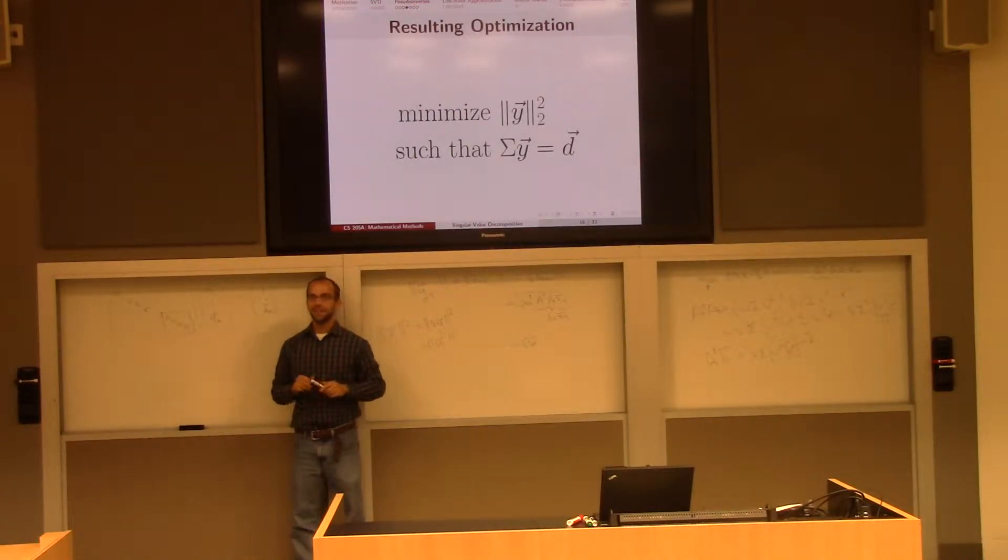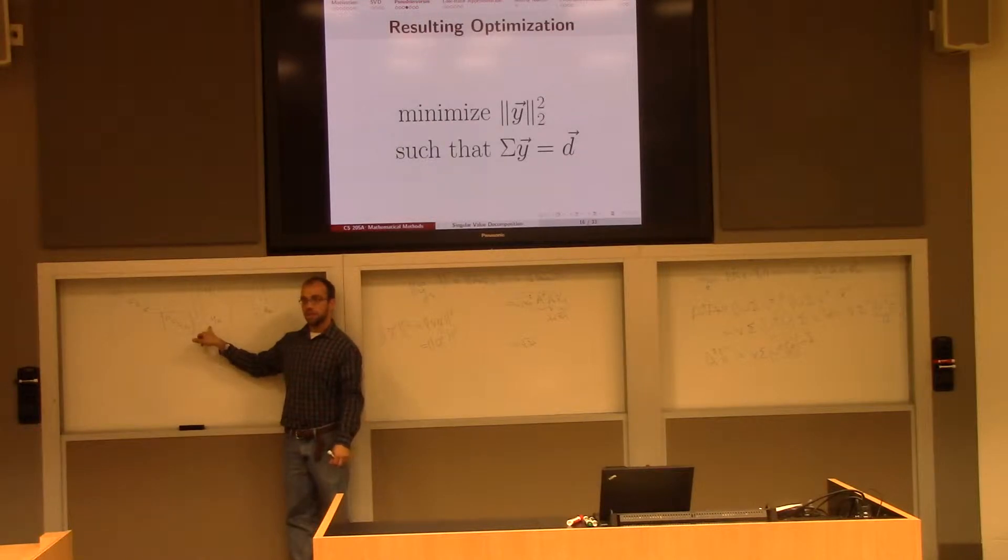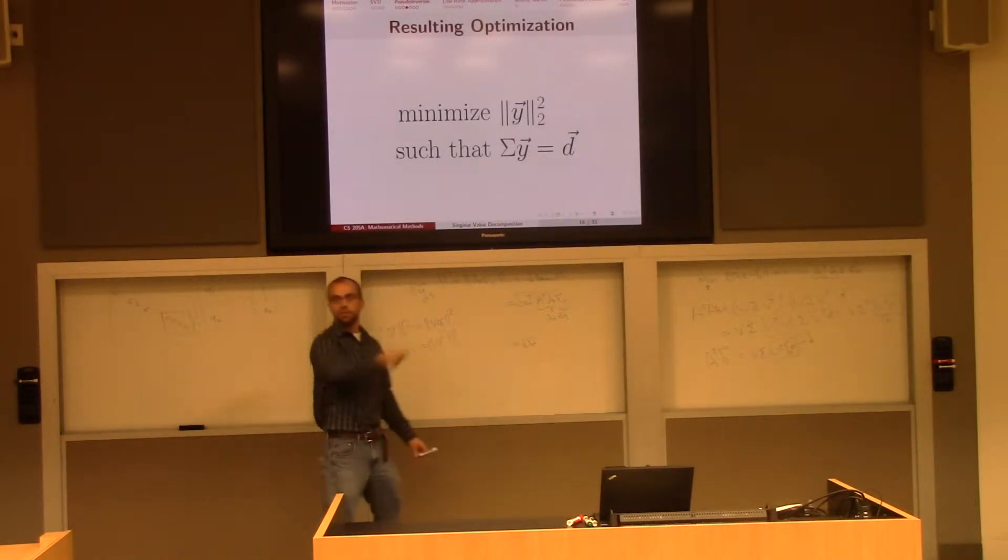So what does this mean? This means that if I want to solve this minimization, it's really easy. Every time that I'm stuck choosing one of the y's, I just divide by sigma. And otherwise, I might as well take yi equals 0, right? Because I'm trying to minimize the norm of y. Why put extra stuff in there?